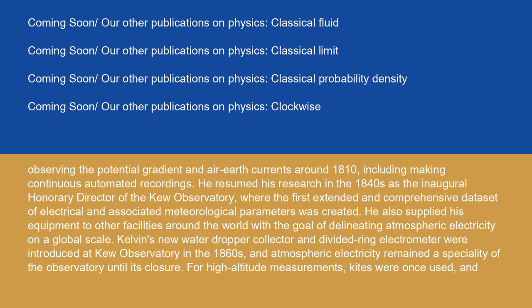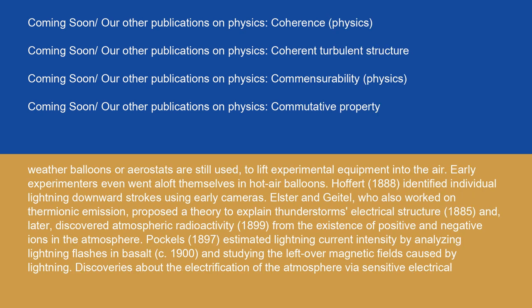For high-altitude measurements, kites were once used, and balloons or aerostats are still used to lift experimental equipment into the air. Early experimenters even went aloft themselves in hot air balloons. Hoffert (1888) identified individual lightning downward strokes using early cameras. Elster and Geitel, who also worked on thermionic emission, proposed a theory to explain thunderstorms' electrical structure (1885), and later discovered atmospheric radioactivity (1899) from the existence of positive and negative ions in the atmosphere. Pockels (1897) estimated lightning current intensity by analyzing lightning flashes in basalt, circa 1900, and studying the leftover magnetic fields caused by lightning.